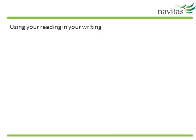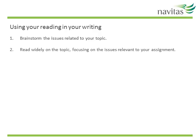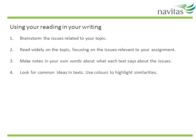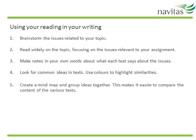The steps on this slide show the overall approach for using your reading in your writing, using all of the strategies we've discussed. When you are ready to start an assignment, first try brainstorming the issues related to your topic — this will give you some keywords you can use to start your literature search. Then read widely on the topic, focusing on the issues relevant to your assignment. Try making notes in your own words about what each text says about the issues. Remember to look for common ideas in texts — you might want to use colours to highlight similarities. Then start to create a mind map and group ideas together to compare the content of the various texts. Keep adding to the mind map as you read.